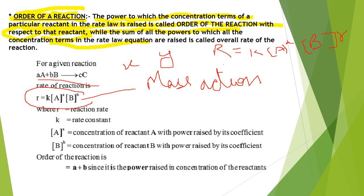What will be the order of the reaction? According to the definition, the value of the order of the reaction is the sum of the powers — that means X plus Y. We can also say that the rate of reaction is directly dependent upon the order of the reaction, and the order of the reaction is completely determined by the rate expression.